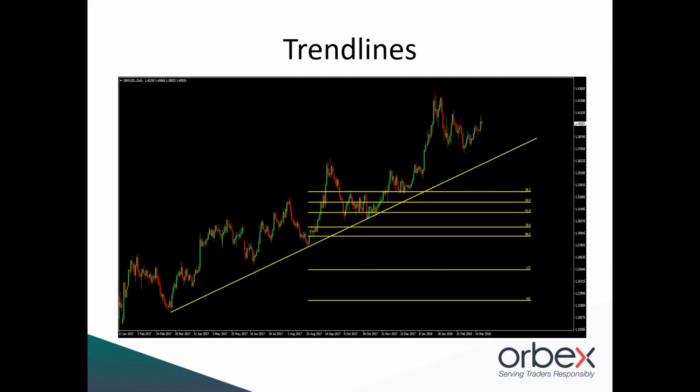Using trend lines as basic support and resistance is the first and most common way of trading trend lines. A more advanced and slightly more strategic way is to look to trade trend line retests. The premise behind this method is the same as trading a retest of broken static support and resistance — the shifting order flow at these levels. If a bullish trend line acts as support where we have demand, and then price breaks that trend line, we know there is more supply than demand at that level. When price retests the level, we can anticipate it will now act as resistance and vice versa.